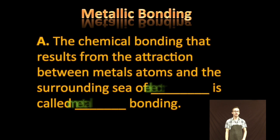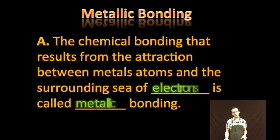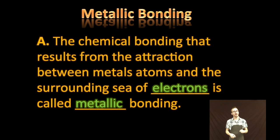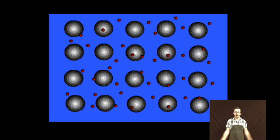So far we've talked about ionic bonding, which is between a metal and a nonmetal. The chemical bonding that results from the attraction between two metal atoms and the surrounding sea of electrons is called, appropriately, metallic bonding.